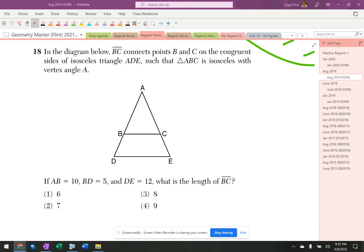Alright, so we got a triangle that's isosceles, which means that this side is the same as that side. AB is 10, BD is 5, DE is 12. What is the length of BC?